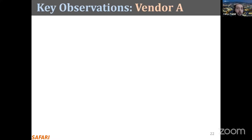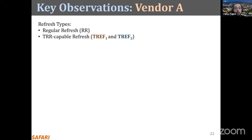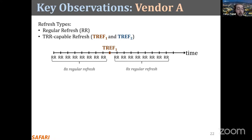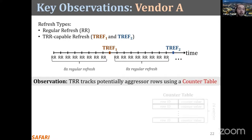Vendor A performs three types of TRR. The first is regular refresh, which every DRAM performs. In addition, Vendor A's TRR mechanism can perform two types of TRR-capable refreshes, which we call TRF1 and TRF2. In this timeline, each tick represents a refresh command issued periodically by the memory controller. During the first 8 refreshes, the DRAM chip performs regular refresh operations. On the 9th refresh, the TRR mechanism performs TRF1. The next 8 are regular, and the 18th performs TRF2. Overall, TRR uses every 9th refresh command to perform TRF1 and TRF2 in an interleaved manner.